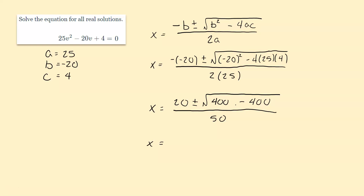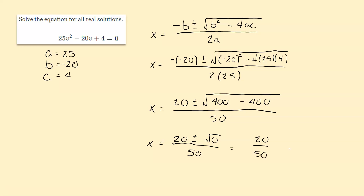Underneath the radical we have 400 minus 400, which is 0. So we have 20 plus or minus square root of 0 over 50. The square root of 0 is just 0, so 20 plus or minus 0 — nothing changes. We just have 20 over 50, which simplifies to 2 over 5. So that is our only solution: x equals 2 over 5.